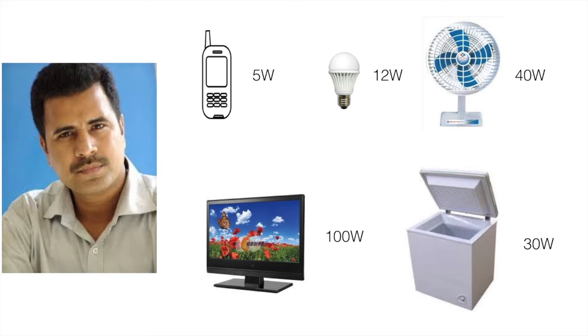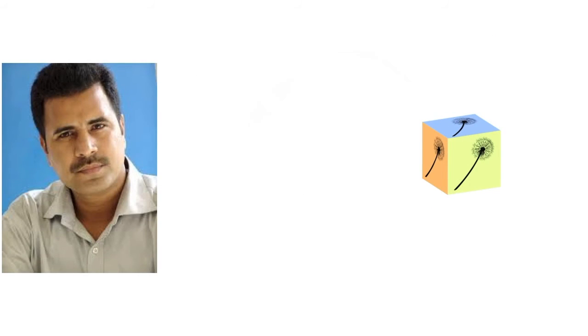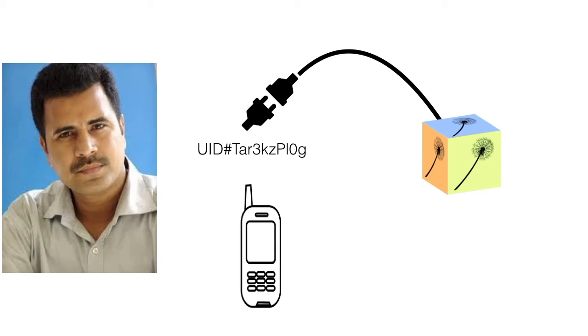Tarek is a customer, and he wants to charge his phone, power some lights, keep his home cool with a fan, maybe watch TV, and protect his family's health with refrigerated food. Tarek's smart plug is his electricity account and his meter. His plug sends a unique signal about the power he's consuming down the wire to the Electric Seed, where his account is maintained on a database.